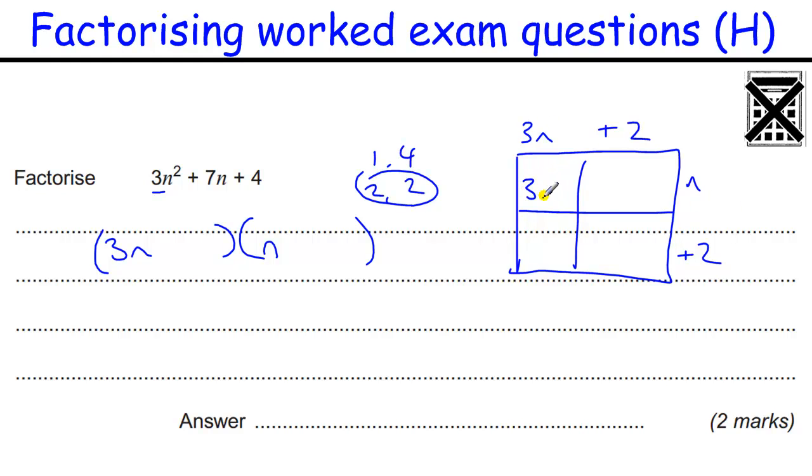OK. So if I just look at, I'm going to take the 2 and the 2 first. Just as an example. So if that was 2 and 2. 3n times n is 3n squared. 2n. And 2 times 3n is 6n. And 2 times 2 is 4. So I've got the 3n squared and the 4. But when I add these two together I get 8n. And I want 7. So if I change that. If I change that 2 there. And that 2 there. I'm just going to change these two parts. So I'm just trying different combinations. The only combination is 1 and 4. But I could have the 1 here and the 4 here. That would give me 1n. And 3 times 4 is 12n. And that's going to be much too much.